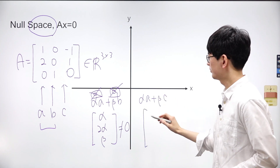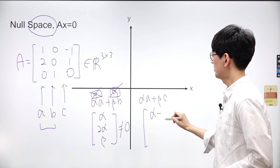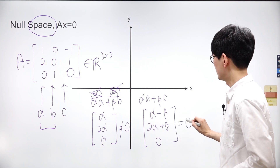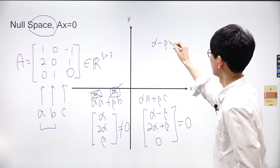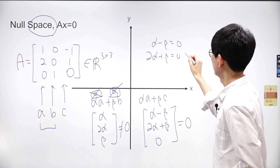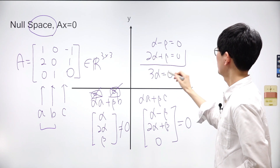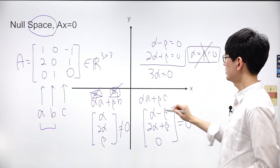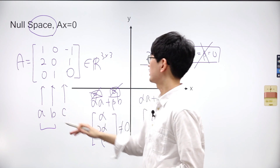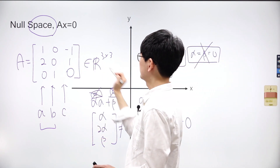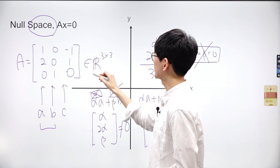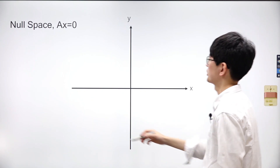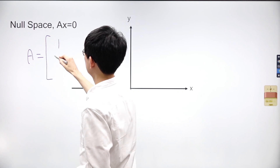Now, what about vectors A and C? When we combine vectors A and C, we get alpha minus beta, 2 alpha plus beta, and 0. Setting alpha minus beta and 2 alpha plus beta equal to 0 and adding the equations gives us 3 alpha equals 0, meaning both alpha and beta must be 0. So 0 and 0 is the only combination confirming the linear independence of vectors A and C. Similarly, vectors B and C also prove to be linearly independent. Hence, every pair of vectors in the matrix is linearly independent, resulting in the matrix achieving a full rank of 3.